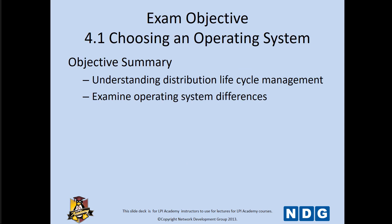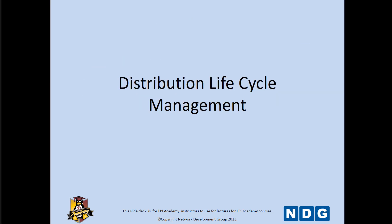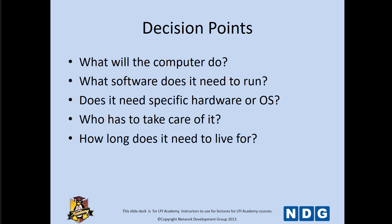Choosing the appropriate operating system is important to do. We're looking at understanding the distribution lifecycle management and examining the different operating system differences. The distribution lifecycle management asks: What will the computer do? What does the software do? What does it need to specify in hardware or software? Who has to take care of it? How long is it needed? And is there a timeframe before it expires?